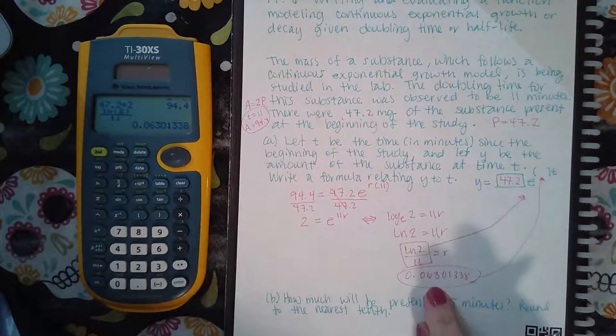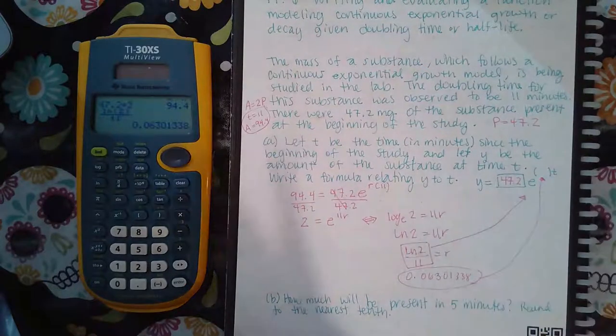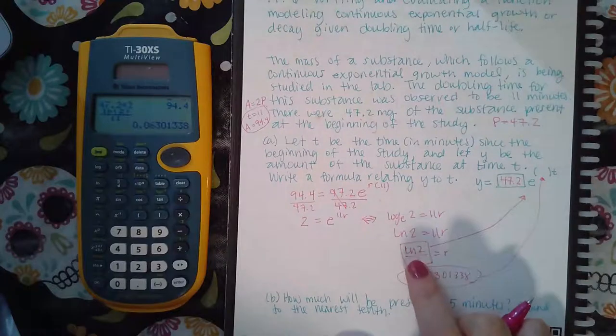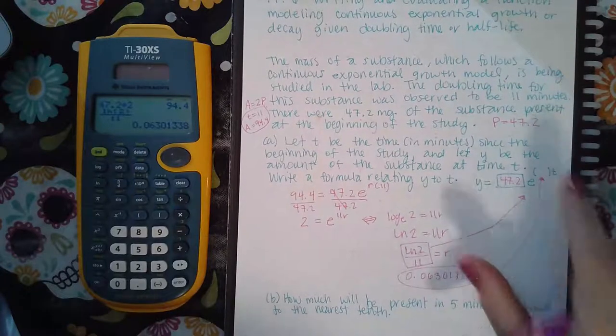So if it does say to round, take the decimal version and round it. If it does not say anything about rounding, then make sure you put the exact answer in that parentheses.